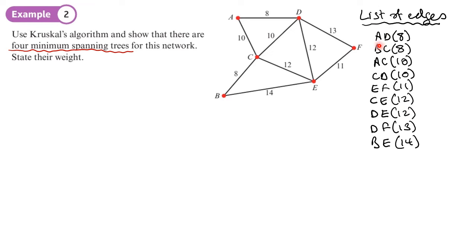That's not going to happen at the start because AD and BC are not going to form cycles. So whether I pick AD first or BC second, it doesn't matter. This is not where the differences are going to come. It's probably going to come here, where I've got the two 10s, and here where I've got the two 12s, where I've got the choices.